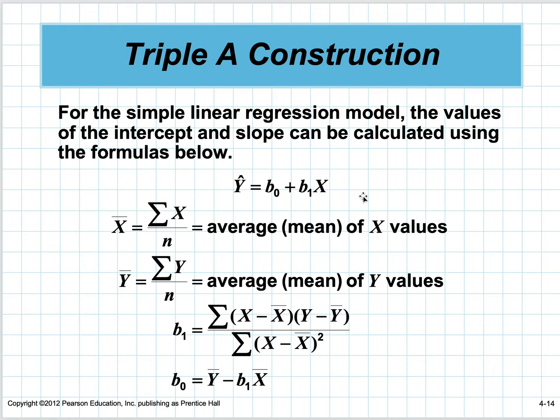The way we do this is we use the least squares method. x-bar is the average of all the x's; y-bar is the average of all the y's. b1 equals the sum of (x minus x-bar) times (y minus y-bar) for each observation, divided by the sum of (x minus x-bar) squared. That gives you b1.